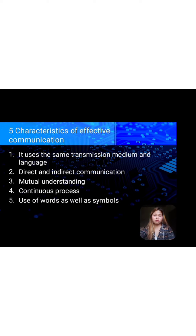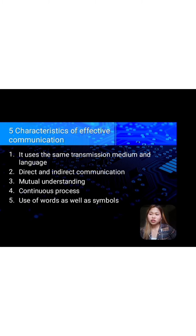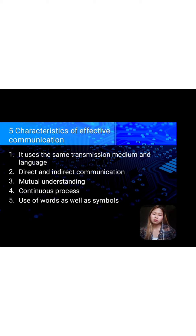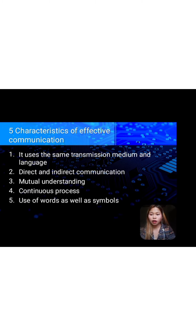We have five characteristics of effective communication. The first one is it uses the same transmission medium and language. Transmission media is a communication channel that carries the information from the sender to the receiver. Data is transmitted through electromagnetic signals. The main functionality of the transmission media is to carry the information in the form of bits across the local area network.